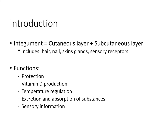The integument is composed of two main layers: the cutaneous layer, which is also known as skin, and the subcutaneous layer, which is the layer underneath — sub meaning underneath the skin.